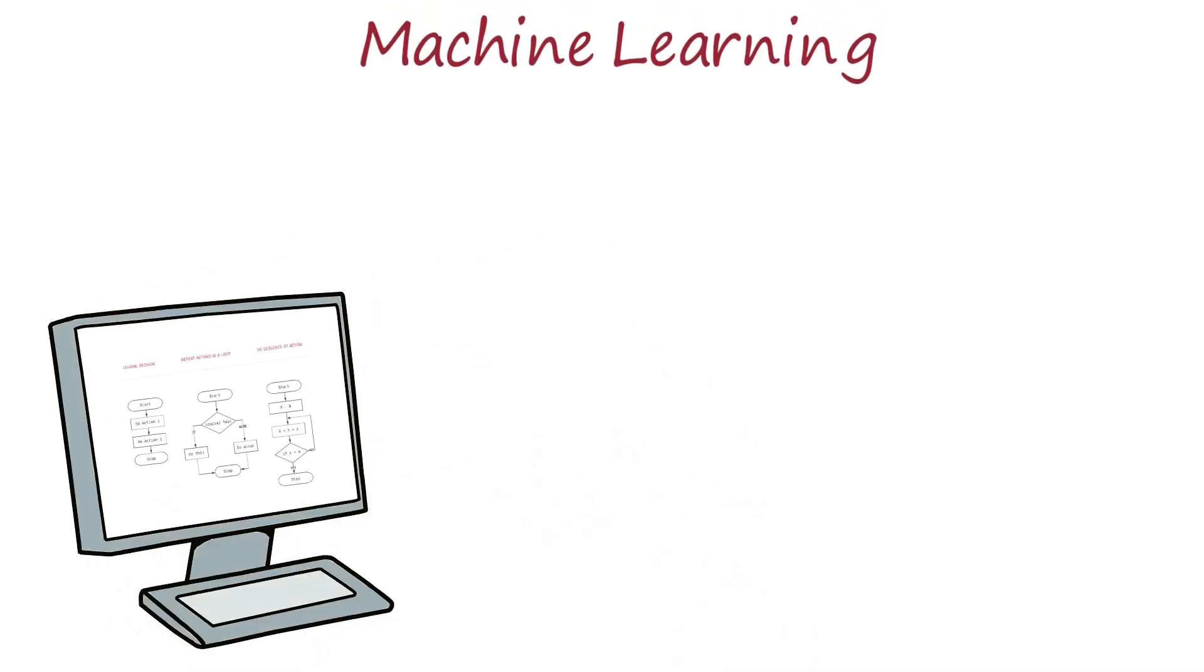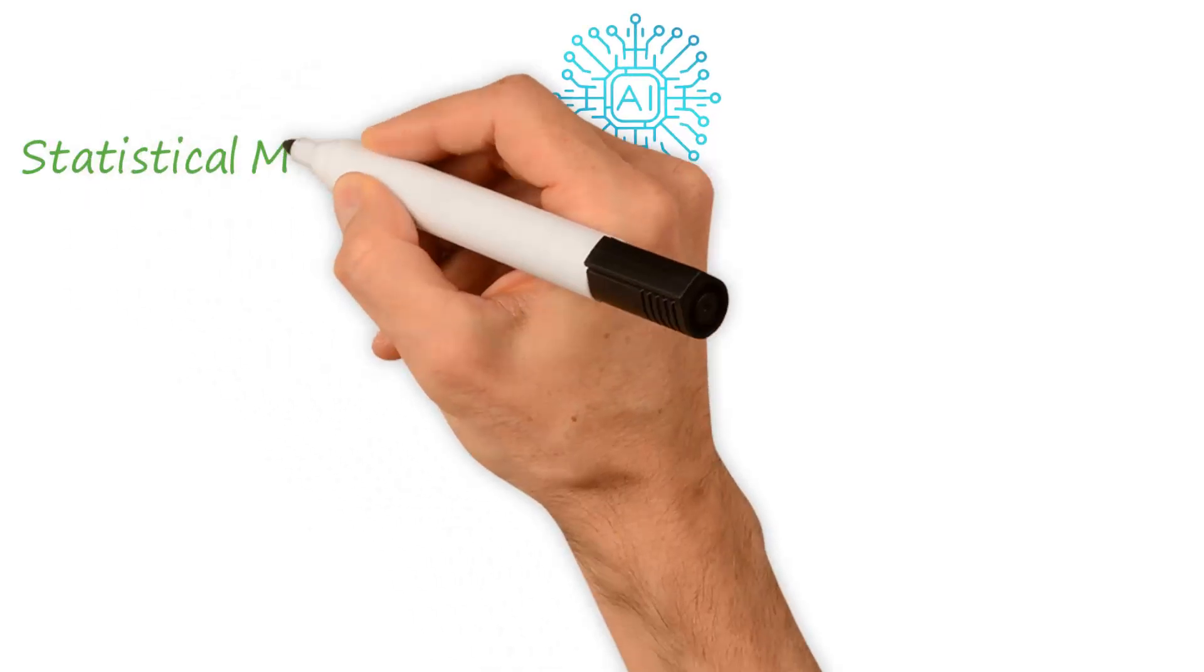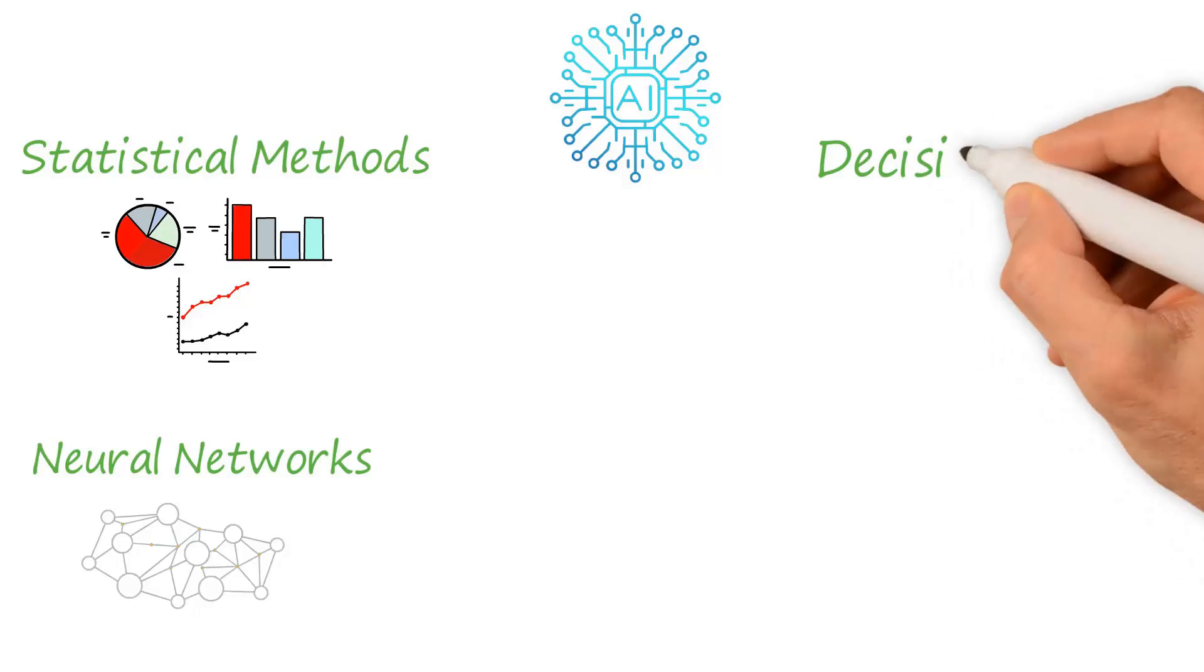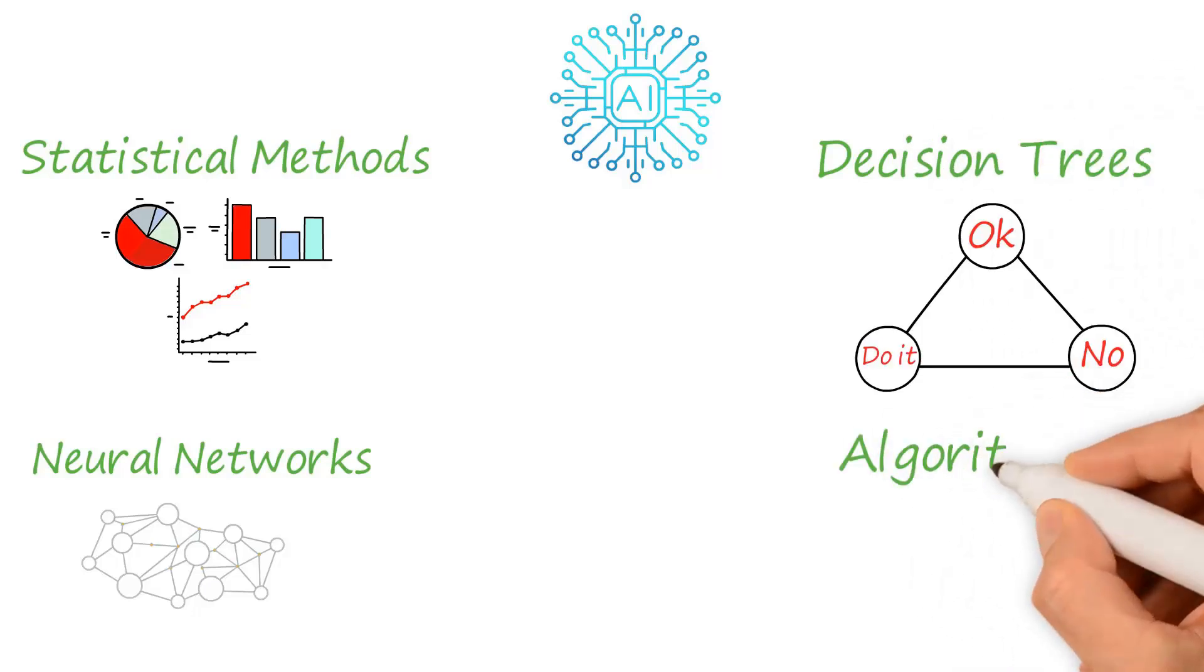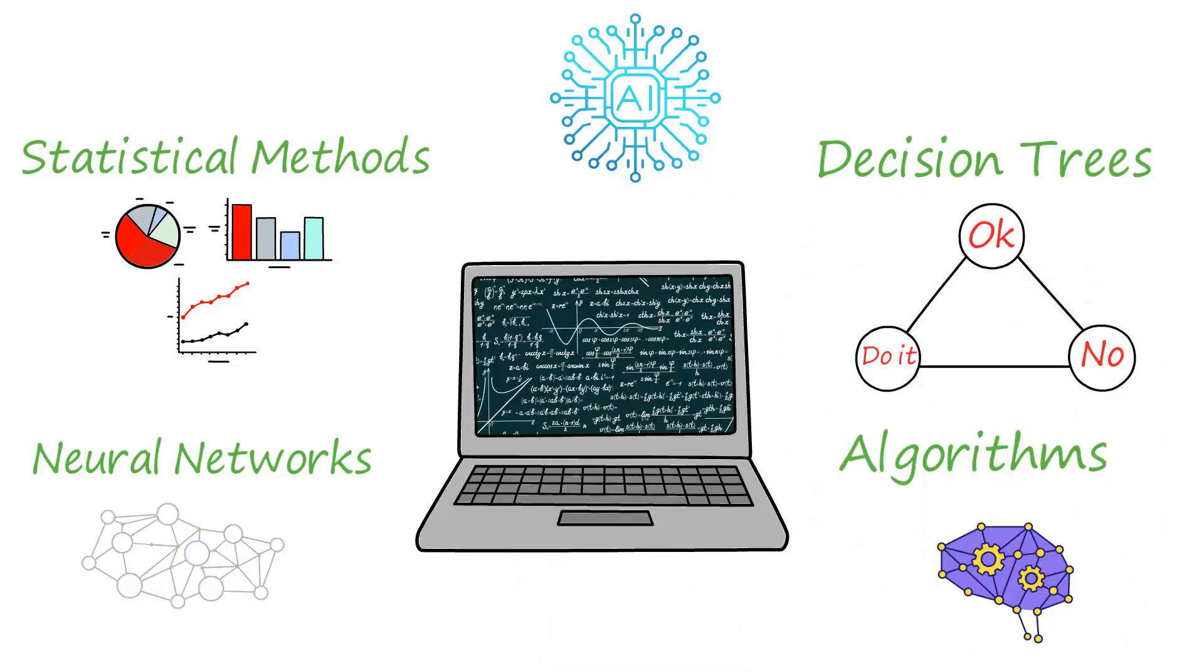Machine learning is a field of computer science that focuses on the development of algorithms that allow computers to learn from data without being explicitly programmed. It's an application of artificial intelligence that involves the use of statistical methods, neural networks, decision trees, and other machine learning algorithms to train computers to make predictions or decisions based on input data.